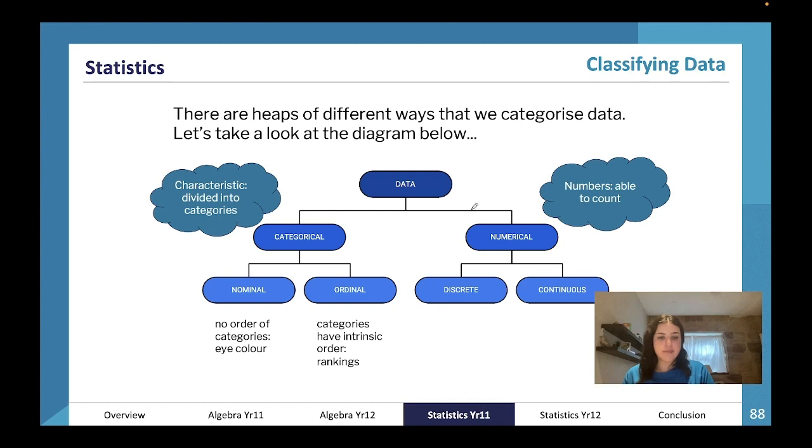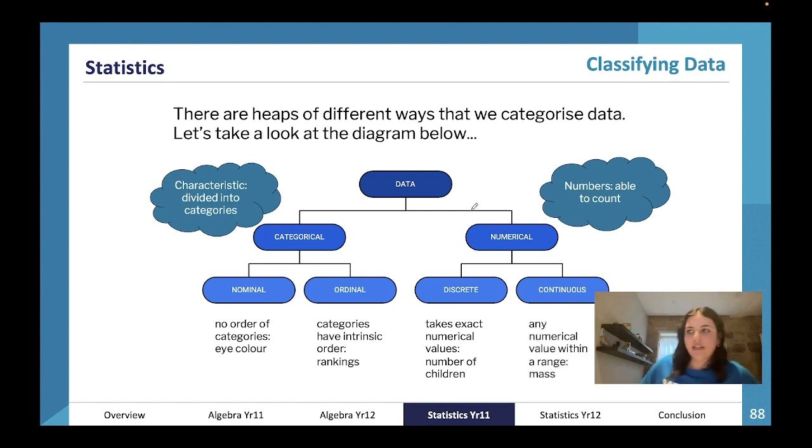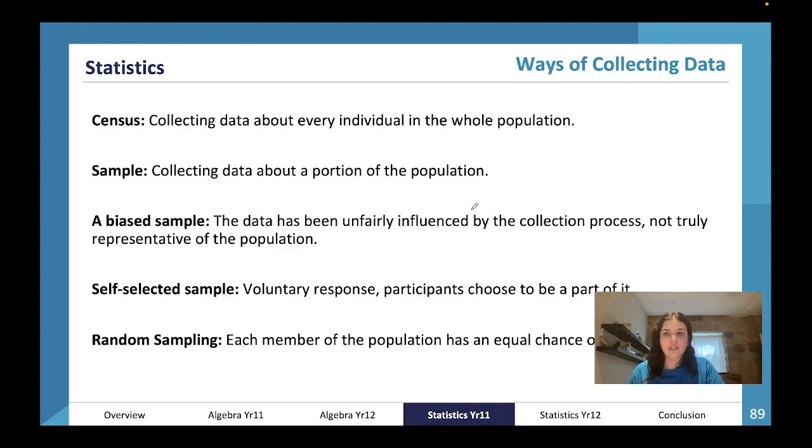Numerical data is broken down into discrete and continuous. Discrete data takes exact numerical values—you can't have 1.5 children, only one or two children. Continuous data is any numerical value within a range, so you can weigh 65.217 kilograms or 65.2174 kilograms—any numerical value within a range.